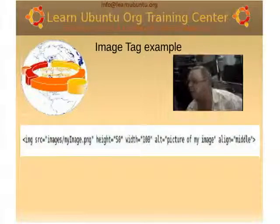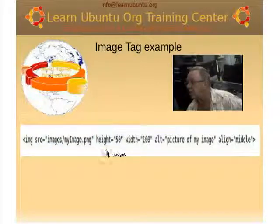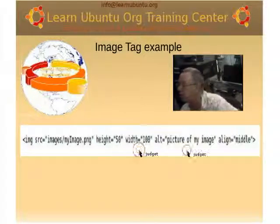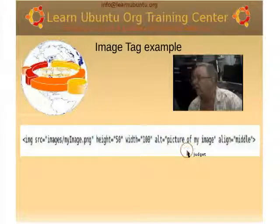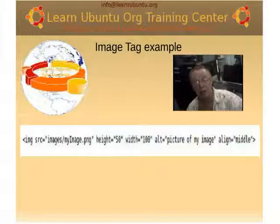Here's an example of an image tag. We specify the source, the height, the width, and the alternate text that's displayed if the browser can't display the image. Remember, if you put the path in wrong, the image won't display — but the alternate text will display and help you troubleshoot.